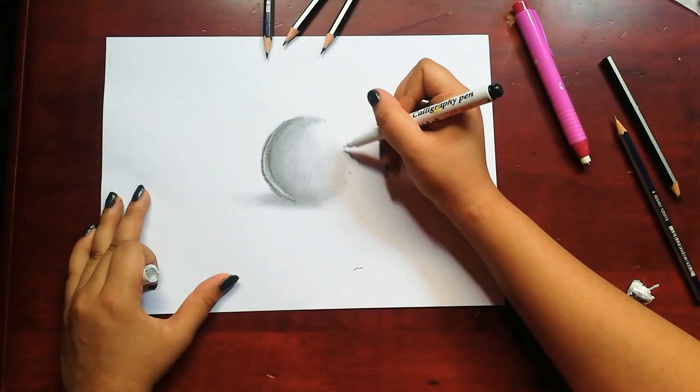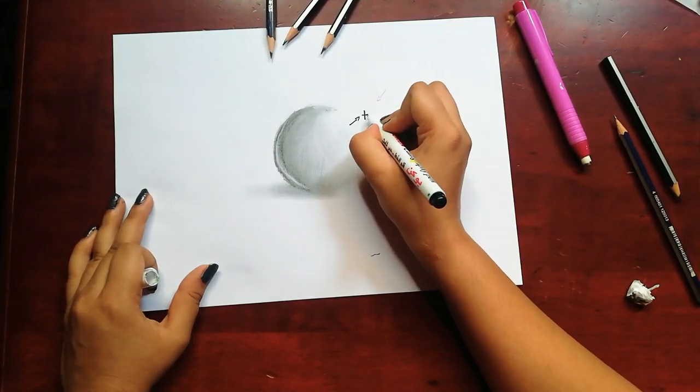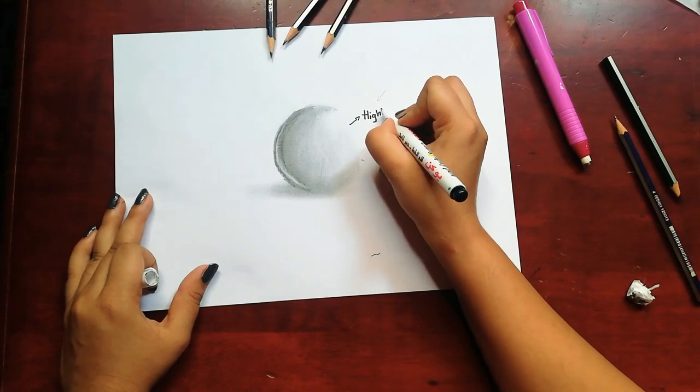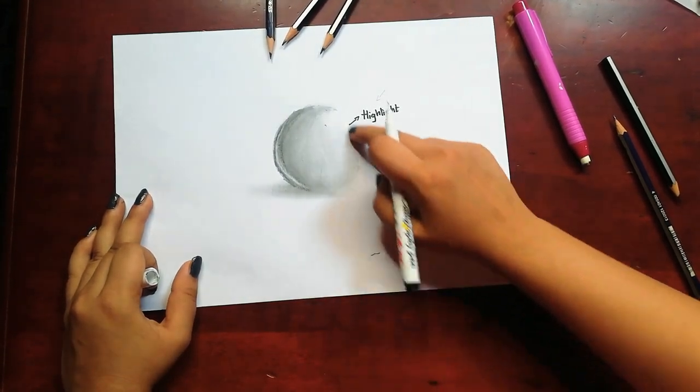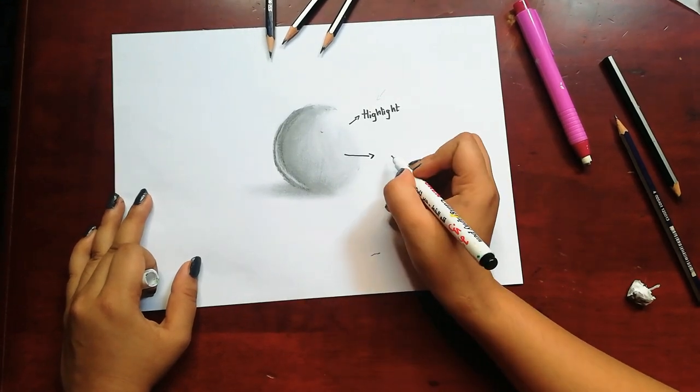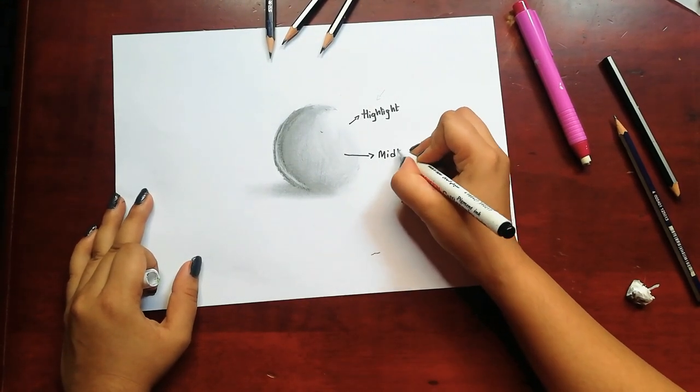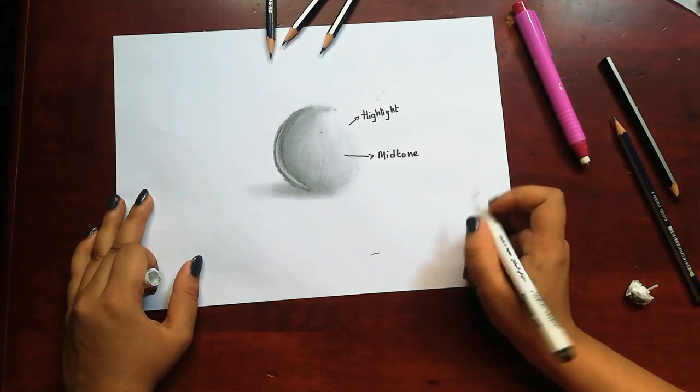The light area of the object is known as the highlight of the object. And then comes the midtone, which comes after the darker area. It's not that dark and not that light, it's the middle portion of the object.